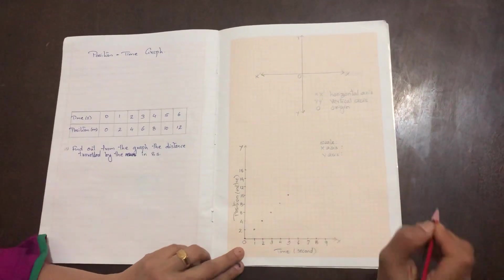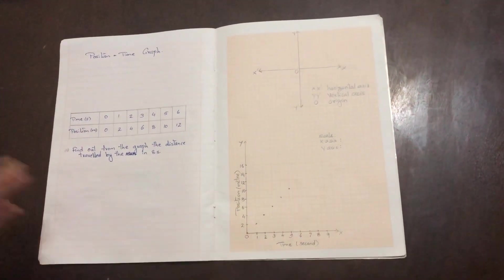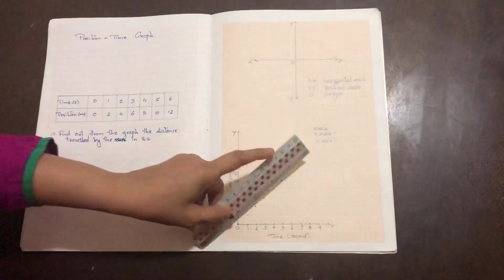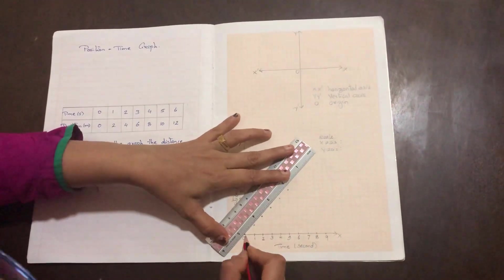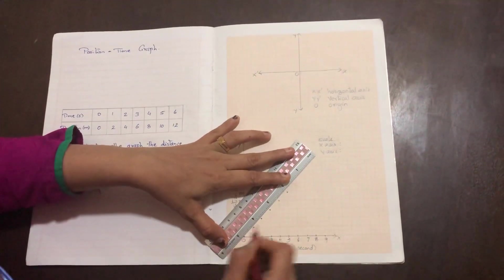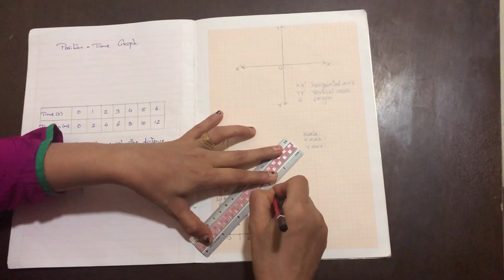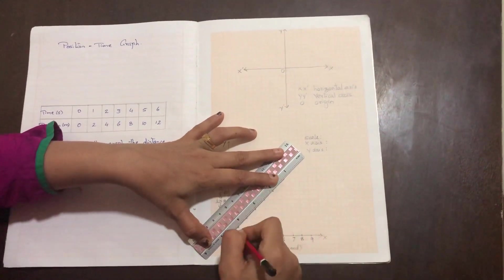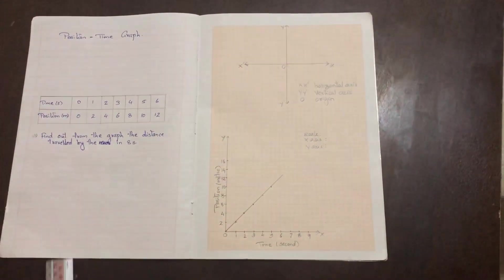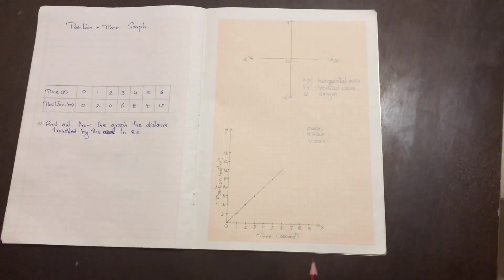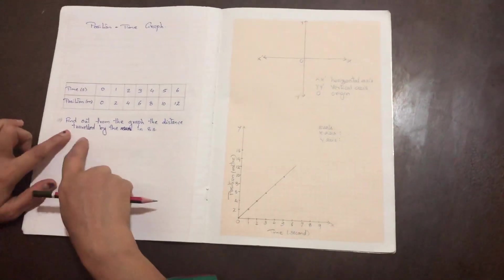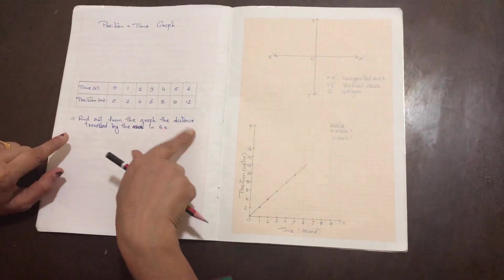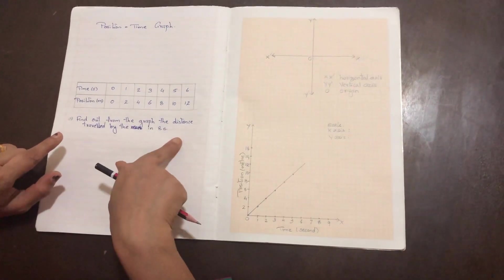The plotting of the graph is now complete. I join all the dots and get a straight line — the graph is completed. This is how you plot a position-time graph. Now there is a second question: find from the graph the distance traveled by the man in eight seconds.